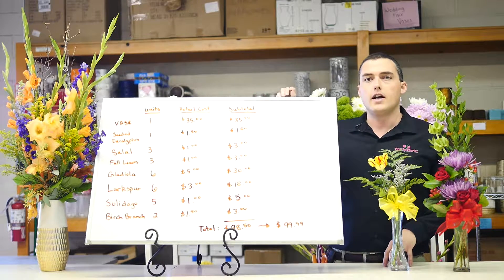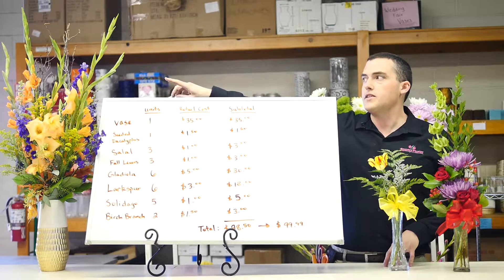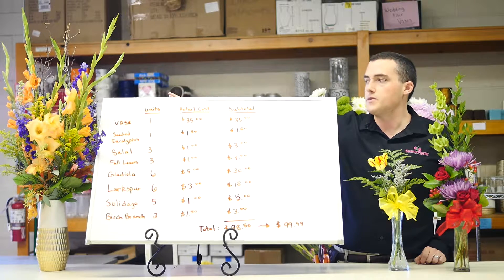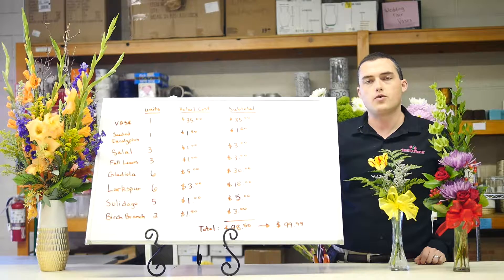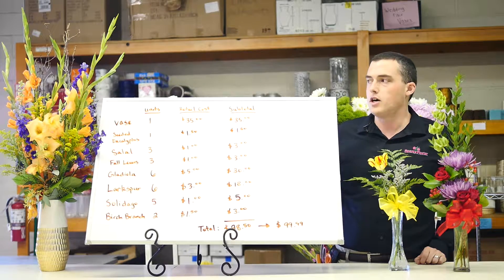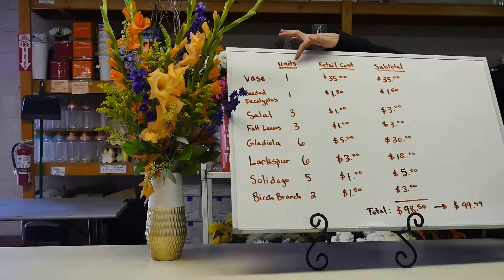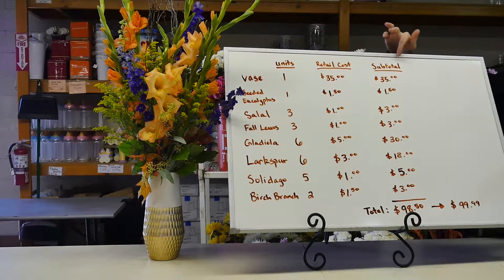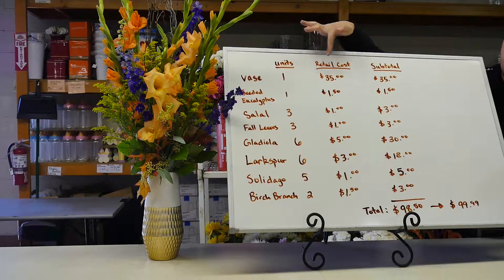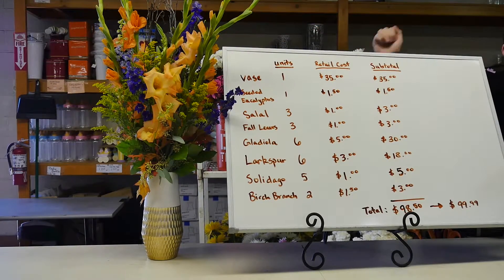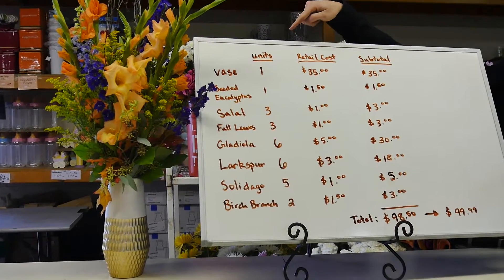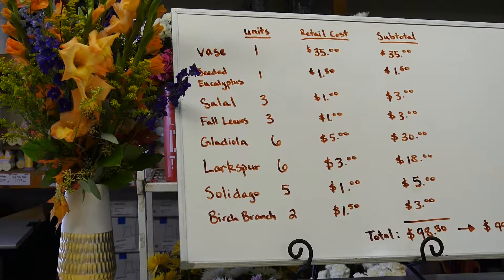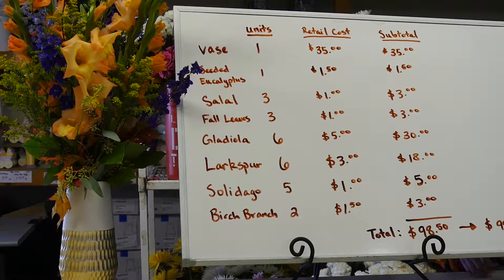So the way we do it is with these recipes. You can see here what I've done is I've actually reciped out this arrangement here on the left, and it's an arrangement of gladiolas, larkspur, and some solidago in a really pretty gold and cream colored container. What I've done is gone through and for every single one of the items I've listed how many went into the actual arrangement, what their retail cost was to our customer, and then I multiplied out and found the subtotal. For example, I have one vase at $35, so 1 times 35 is $35. I continue this process with every single item that went into this arrangement. Once I get done I add up my subtotal column all the way down to the bottom, and we come up with a total cost to our customer. This tells us what we should actually be charging.